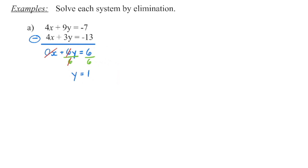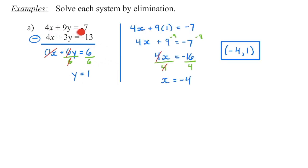Now once I have y I need to find x, so I'm going to substitute into one of those equations — it doesn't matter which one — and we're going to get the value of x. I happen to choose the first equation. So we have 4x plus 9; we're going to substitute in this 1 in the place of y, so I've got 9 times 1 equals negative 7. I isolate that variable and end up with an x coordinate of negative 4.